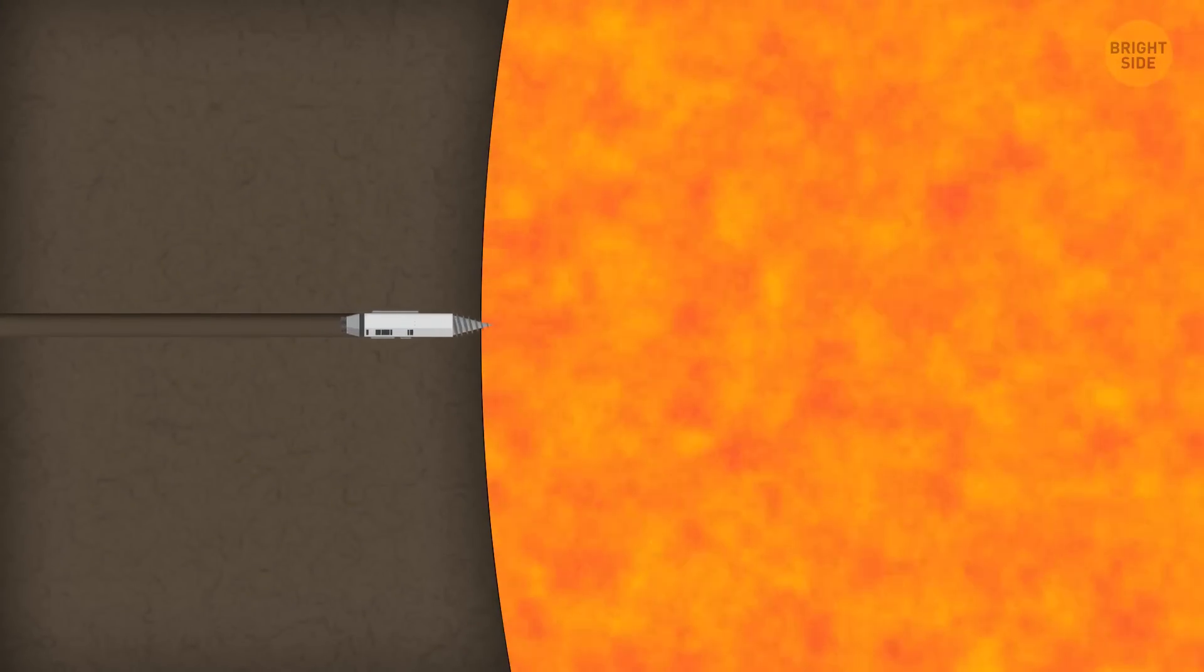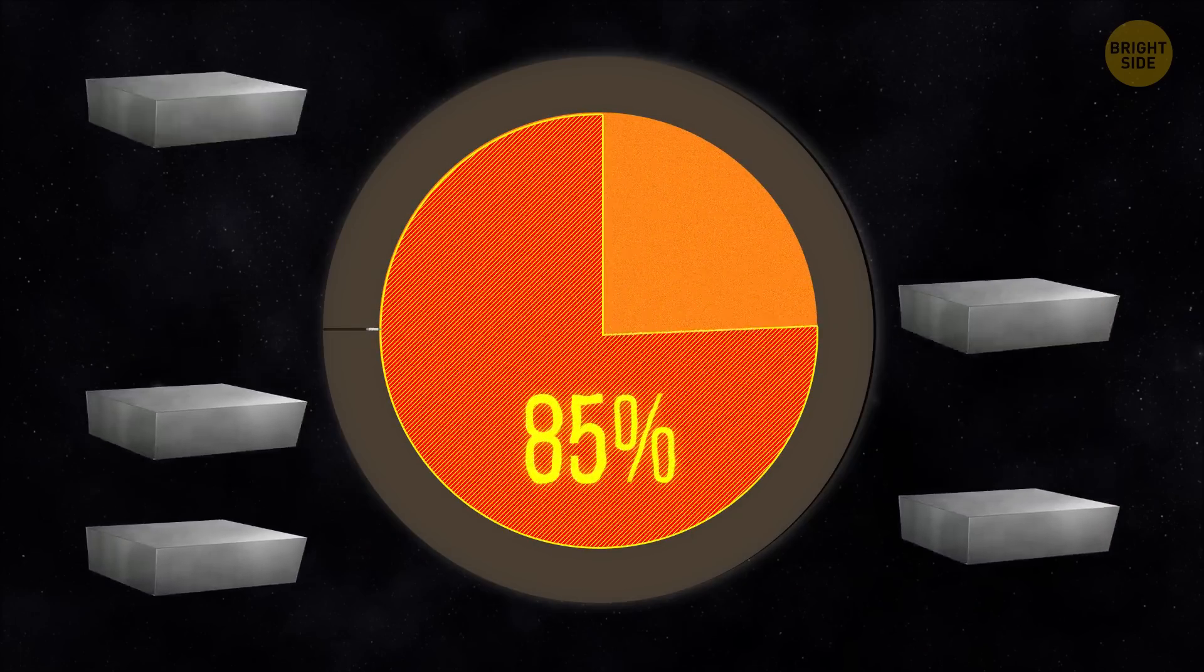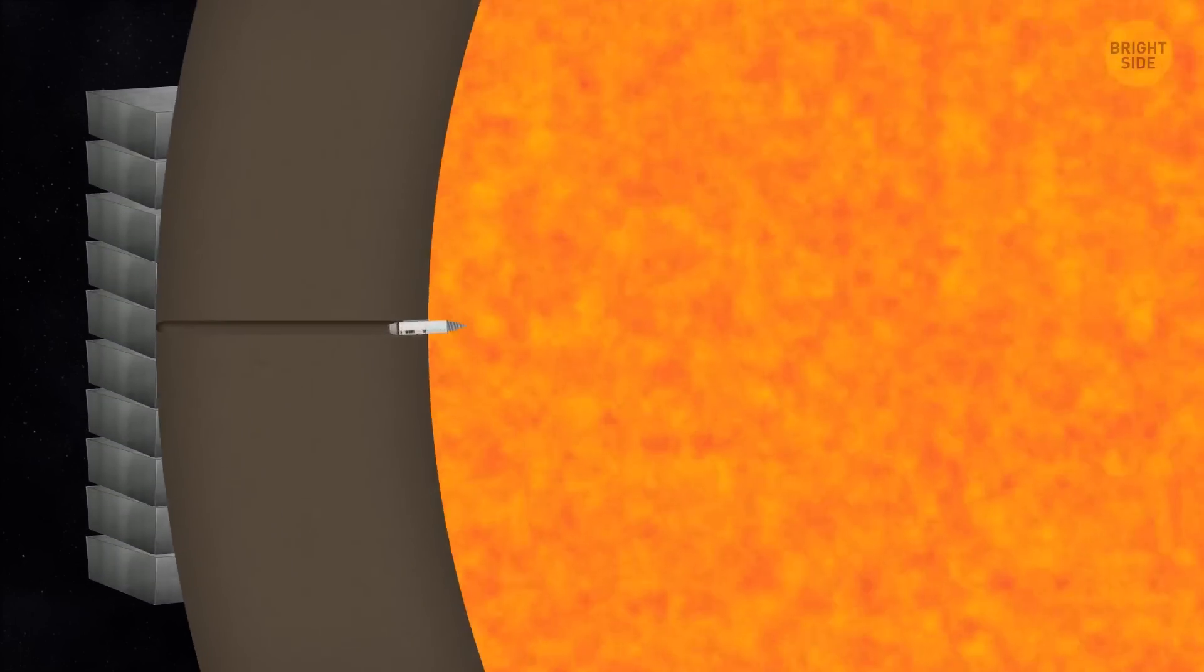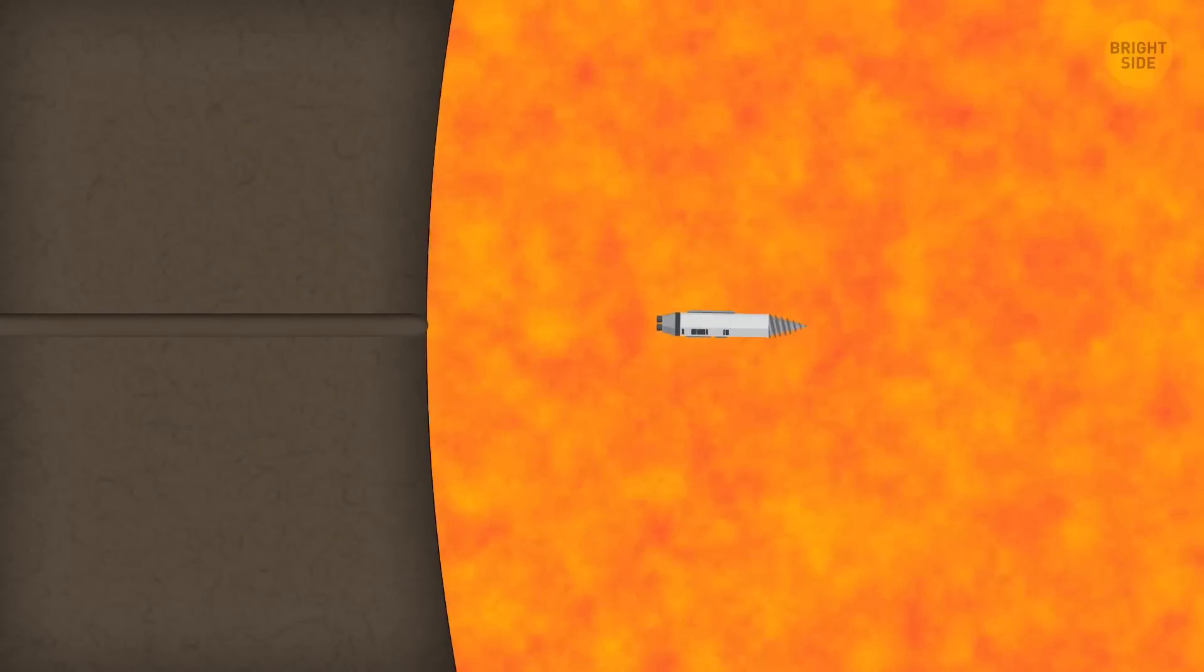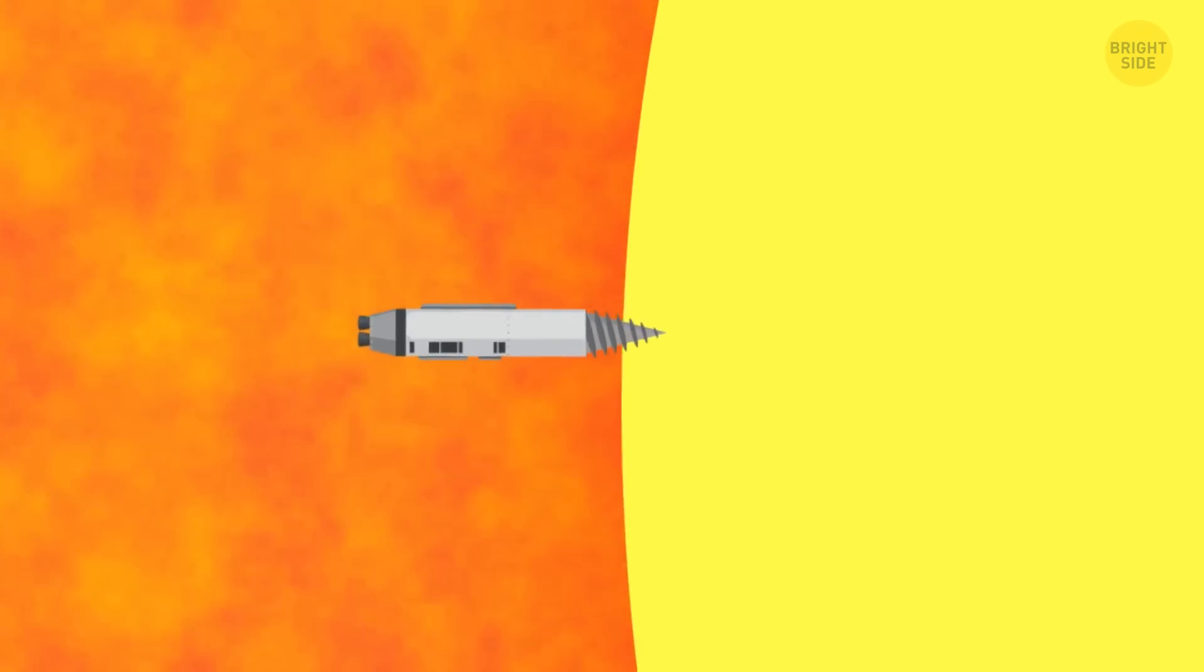you see Mercury's metallic core. It takes up almost 85% of the planet's volume and contains more iron than any other planet we know about. You don't need to drill anymore. The outer core is liquid. But once you reach the solid inner core, you have to switch that drill on again.